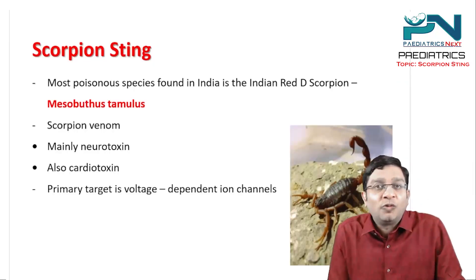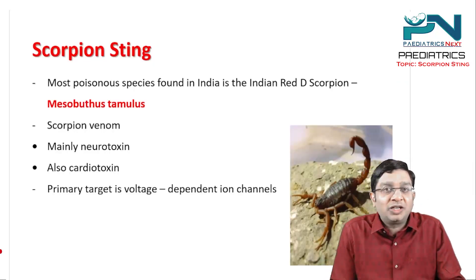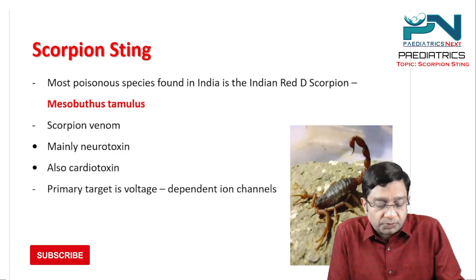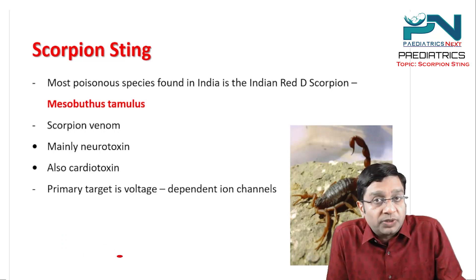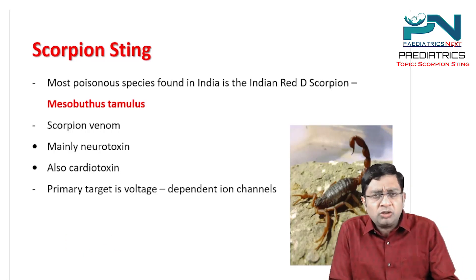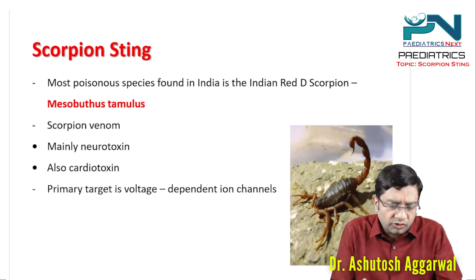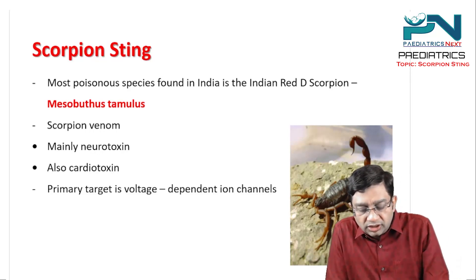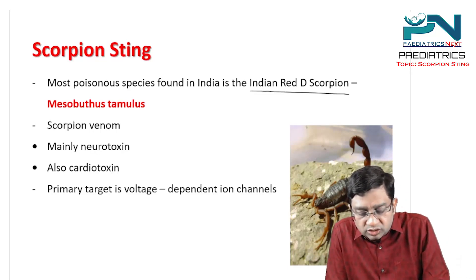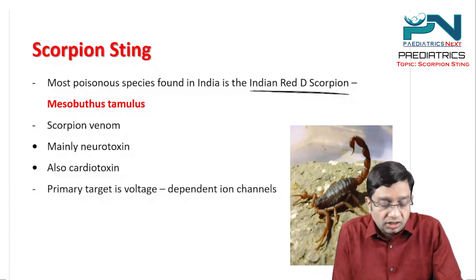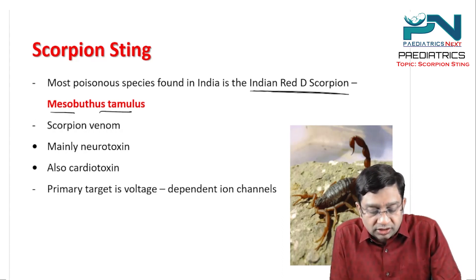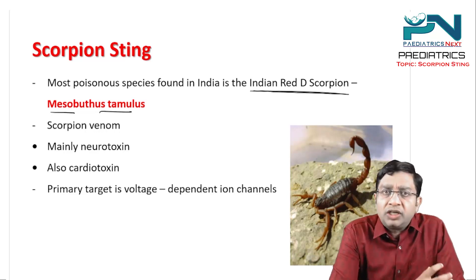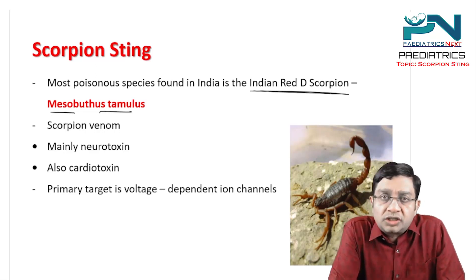Hello students, welcome to the channel Pediatrics Next. The topic of discussion today I have specifically chosen is the scorpion sting. Particularly one or two lines regarding which is the most poisonous species found in India — that is the Indian red scorpion, that is the Mesobuthus tamulus — one line you can remember. But what is important is regarding the scorpion toxin.